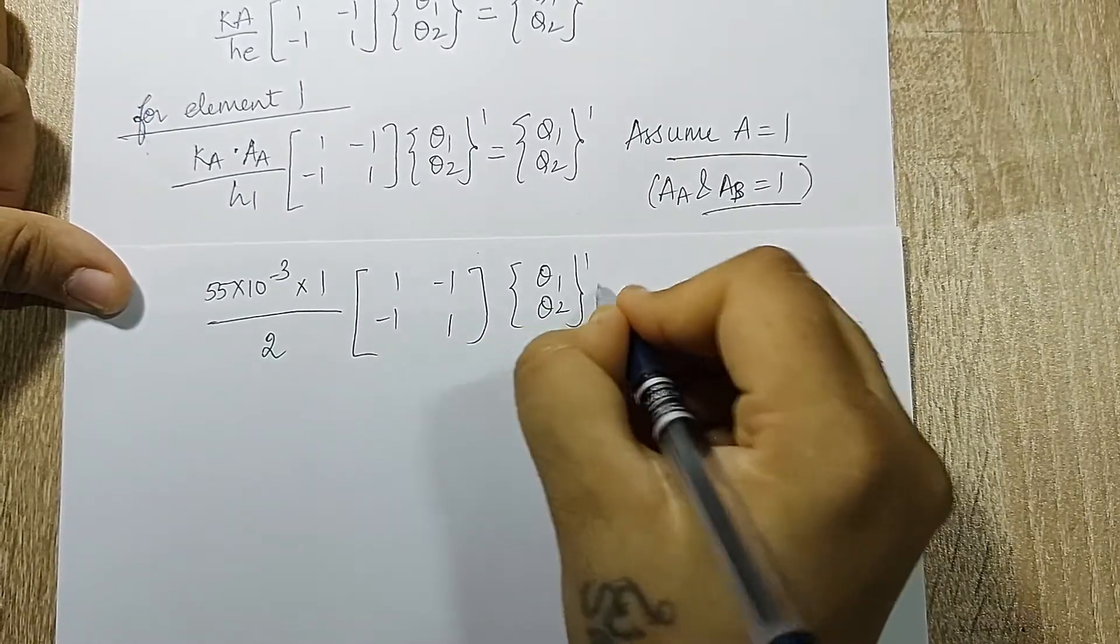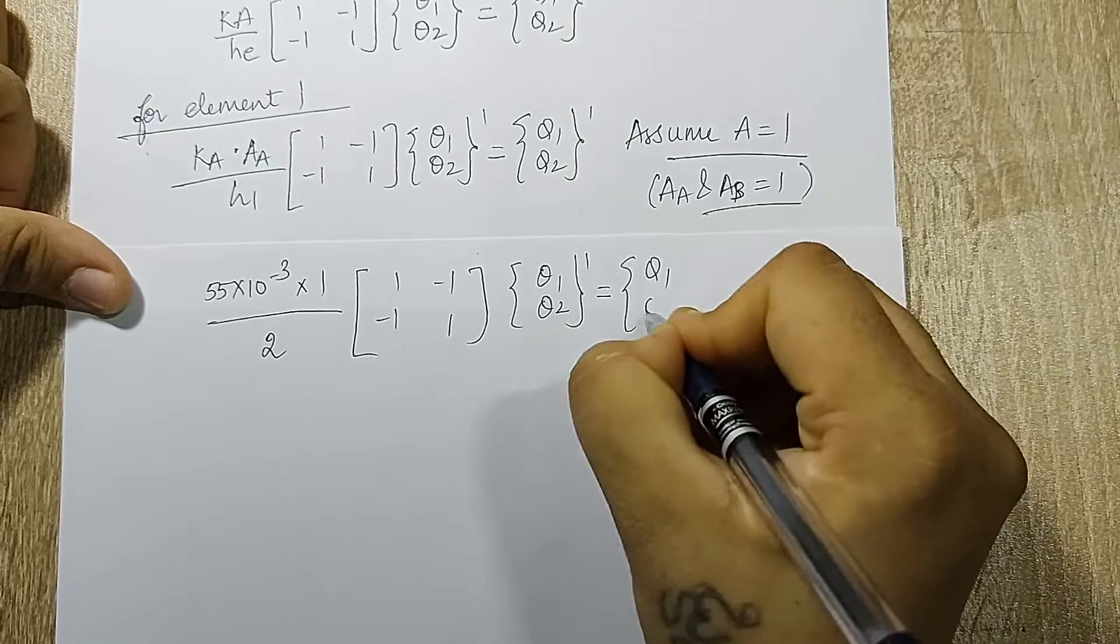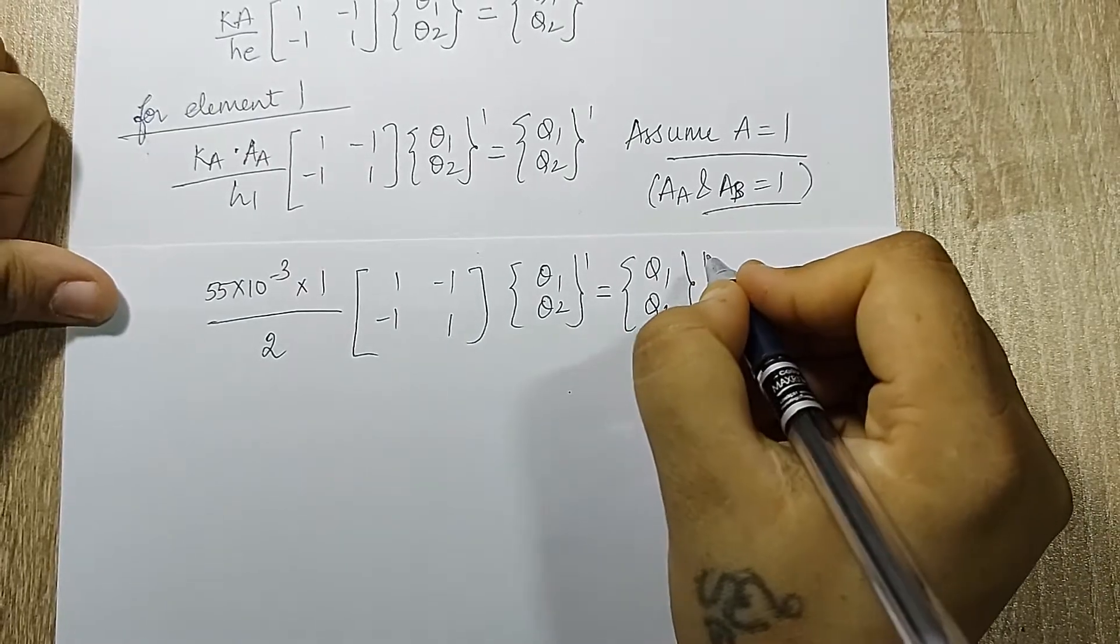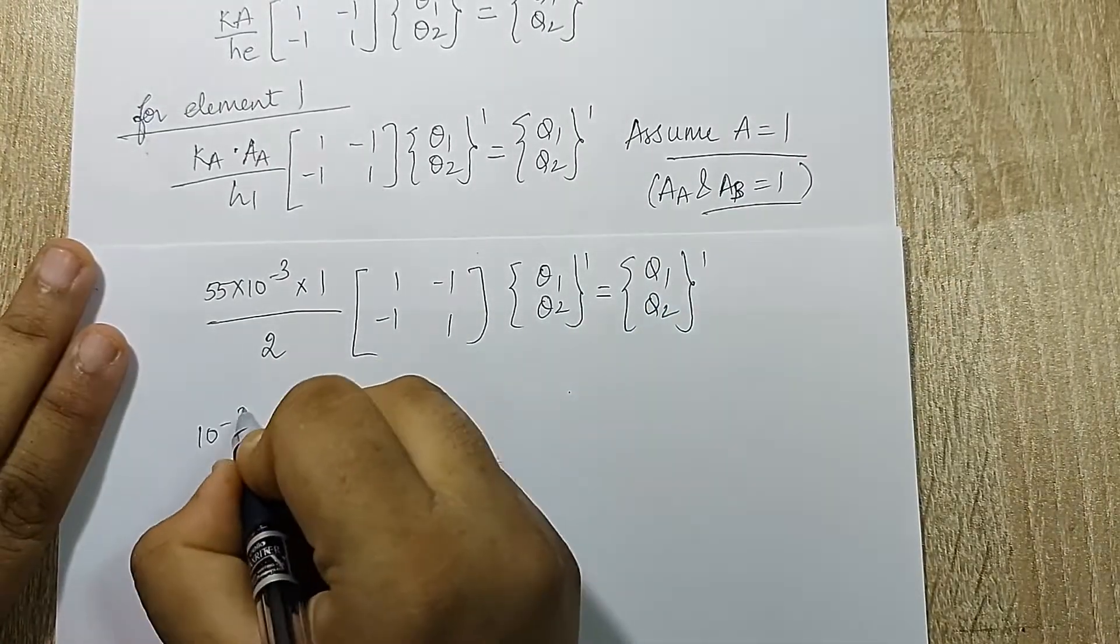{theta_1, theta_2} raise to 1 is equal to {q_1, q_2} raise to 1. When I solve this I get 10 raise to minus 3.